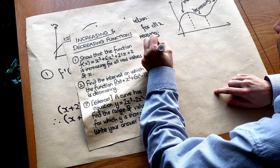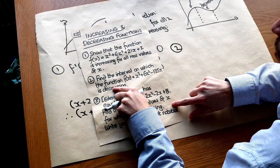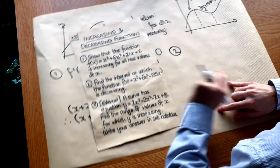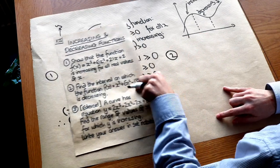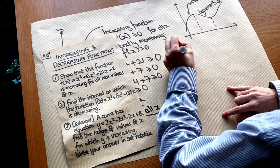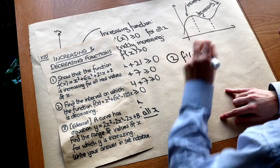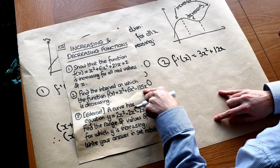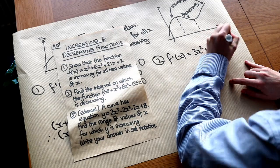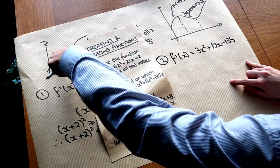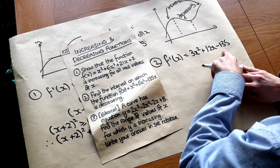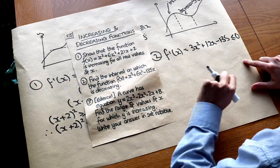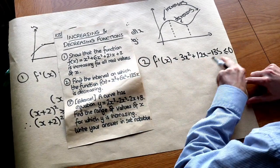The second question: find the interval on which f(x) = x³ + 6x² − 135x is decreasing. As before, we differentiate: f′(x) = 3x² + 12x − 135. Since we want a decreasing function — going downhill — the gradient is less than or equal to zero. If it said strictly decreasing, it would be strictly less than zero. So we just have to solve this inequality.